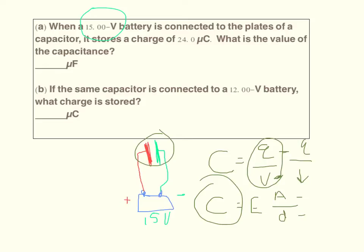And so for our problem, all we need to do for part A is to define the volts we have as 15 and the charge is 24 times 10 to the negative 6. So 24 - that's an ugly looking 4, I'll rewrite that - 24 times 10 to the negative 6.